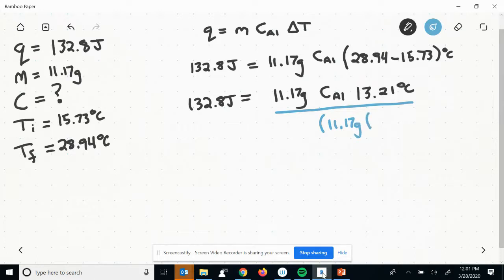13.21 grams and 13.21 degrees Celsius. But I need to do that to both sides of the equation, right? We're going to do it to one side. I need to do it also to the other. So I'm dividing it by 11.17 times 13.21 grams or degrees Celsius.